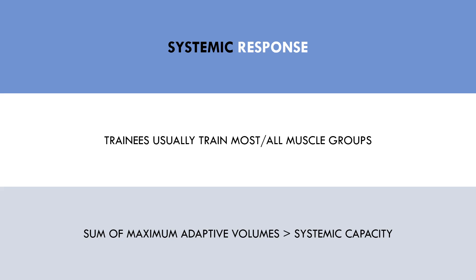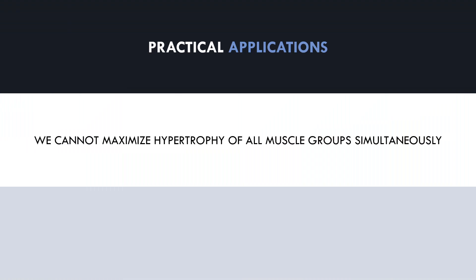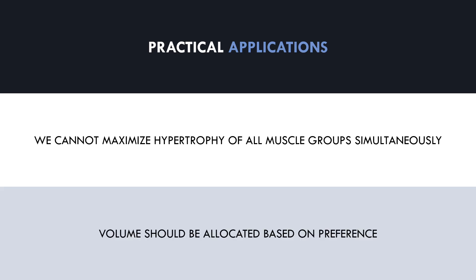So what practical applications does this have for trainees seeking to maximize muscle growth? Because we cannot train all muscle groups at maximum adaptive levels simultaneously, we cannot maximize the rate of muscle growth for all muscle groups at the same time. Therefore, trainees should allocate volume based on preference — performing more volume for the muscle groups they want to emphasize and less volume for those they don't. This volume allocation can be adjusted over time based on the current goals of the individual.